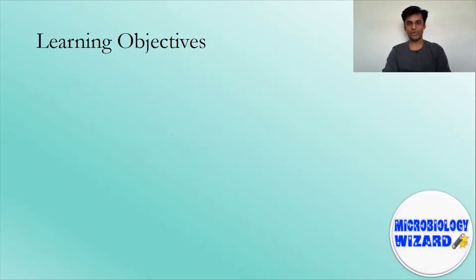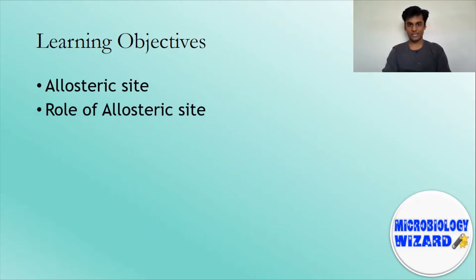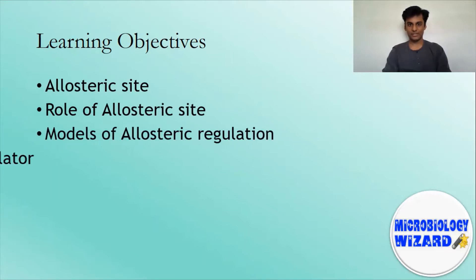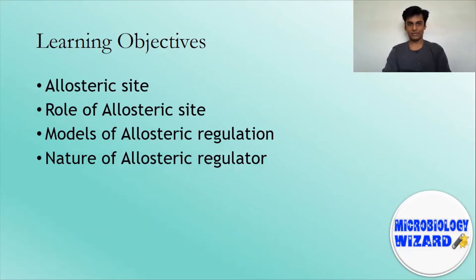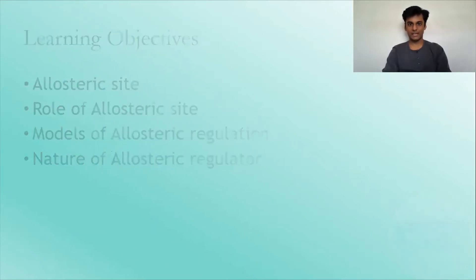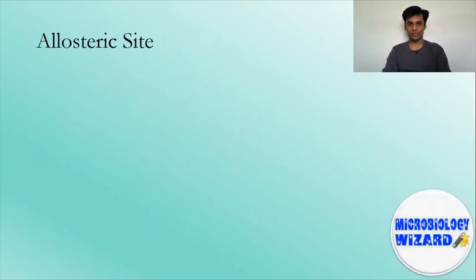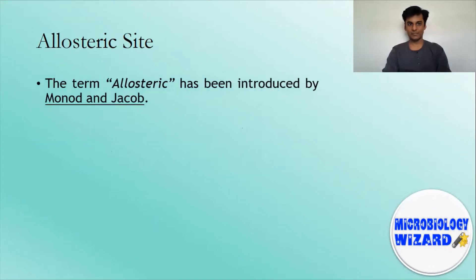In this lecture, we are going to focus on allosteric regulation of the enzyme. The main objectives of this tutorial will be to understand the allosteric site, role of allosteric site, models of allosteric regulation, and nature of allosteric regulator. The concept of allosteric site was discovered or evolved in 1954. The site other than the active site of an enzyme where the regulatory molecule can bind and control the activity of an enzyme is termed as allosteric site.